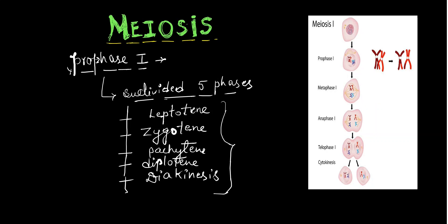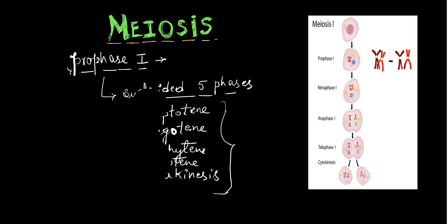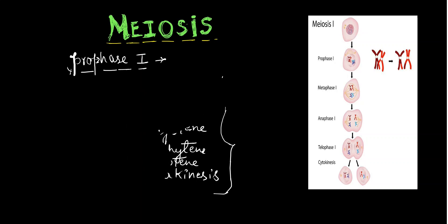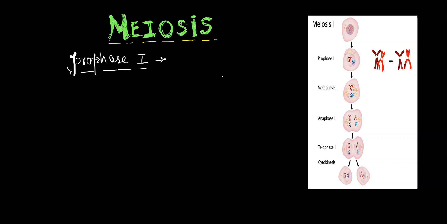Let me tell you about these phases one by one. First is Leptotene. In the Leptotene phase, what happens? Chromosomes are condensed — chromosomes are in the condensed form.